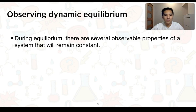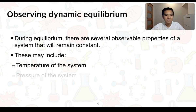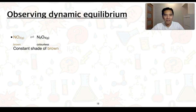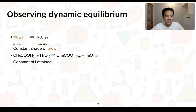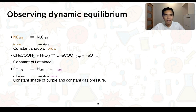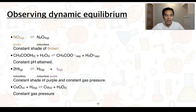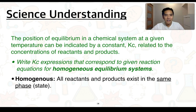During equilibrium, several observable properties of a system remain constant: temperature, pressure, colour, and pH. Returning to our previous examples — for NO2 converting into N2O4, at equilibrium we get a constant shade of brown. For ionisation of a weak acid, a constant pH is attained. For decomposition of hydrogen iodide, a constant shade of purple (from iodine gas) and constant gas pressure are observed. For reduction of copper oxide, a constant gas pressure is observed.